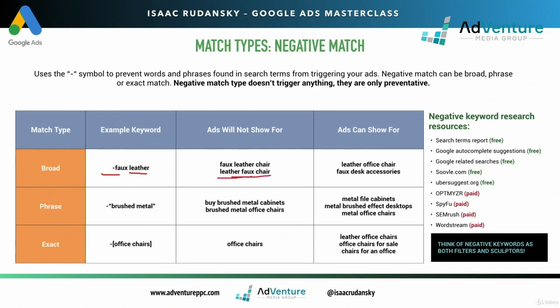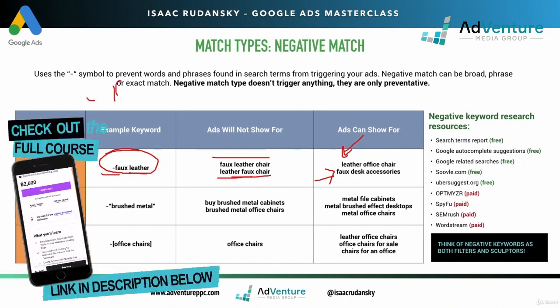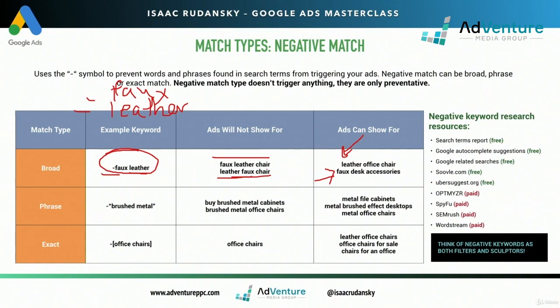You have to be careful because with two words — faux and leather — I'm telling Google that only when both those words are in the search term do I forbid showing an ad. Ads will not show for faux leather chair or leather faux chair, but ads can show for leather office chair and faux desk accessories, even though leather and faux each appear separately. My negative keyword is faux leather as a pair. So if I wanted to block faux or leather independently, I'd need separate negative keywords — negative faux and negative leather — and then I wouldn't show up for leather office chair or faux desk accessories.